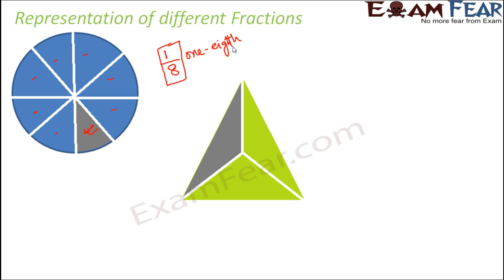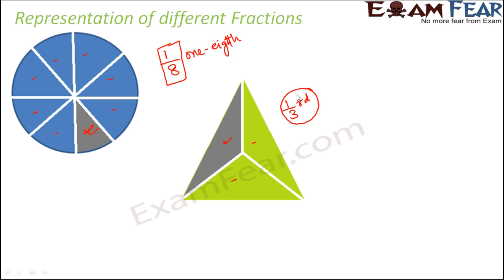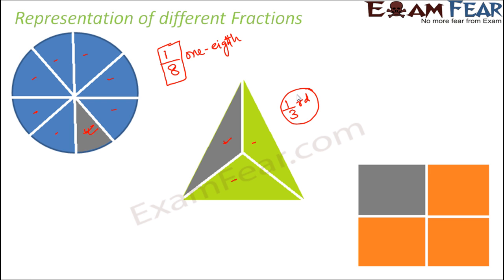Now let us look at this triangle. This triangle has been divided into three equal parts. Out of those three parts, one part is shaded, so one third of the triangle is shaded.